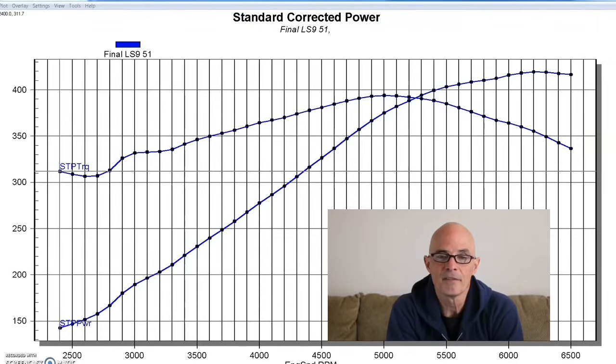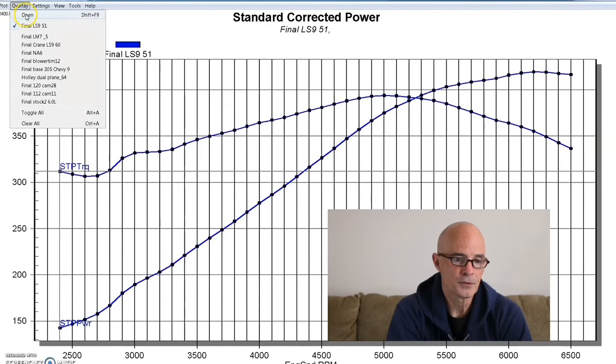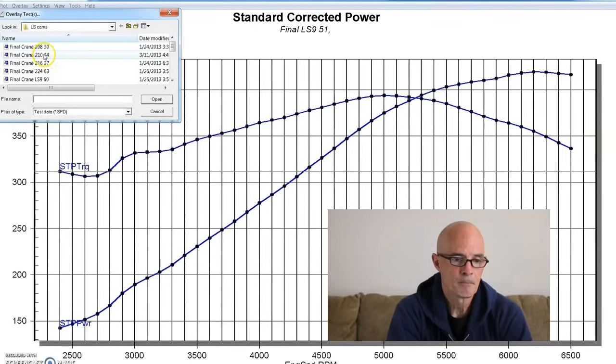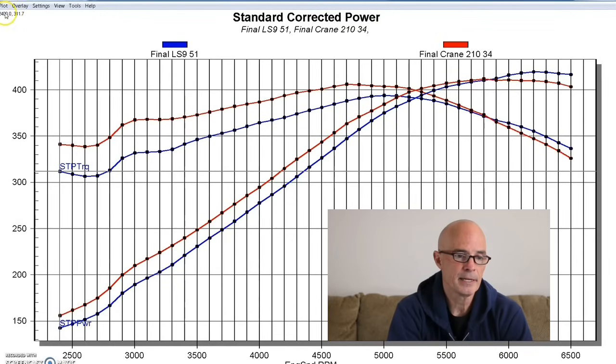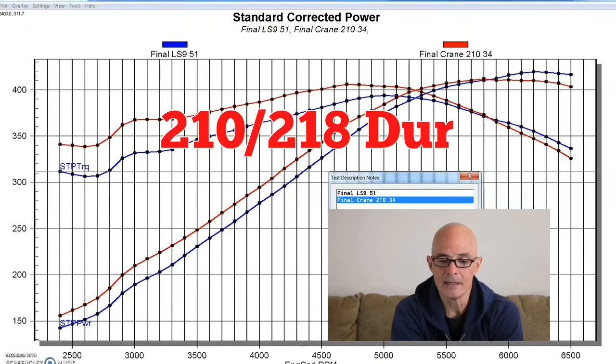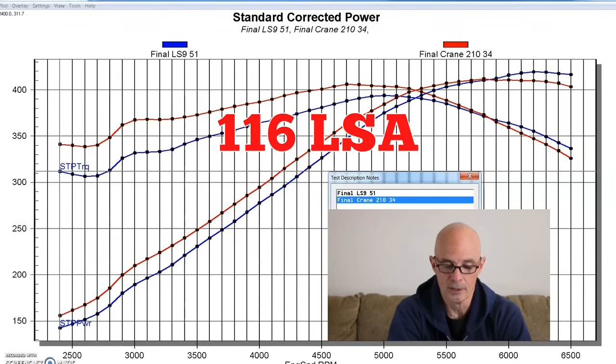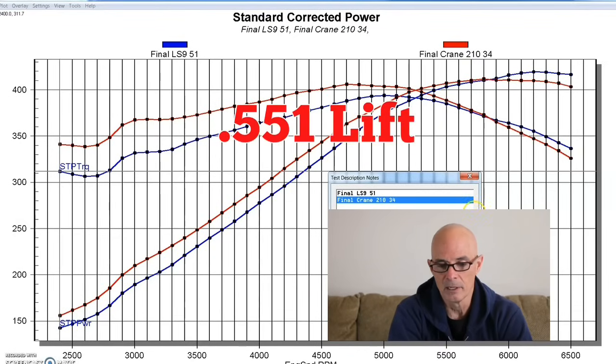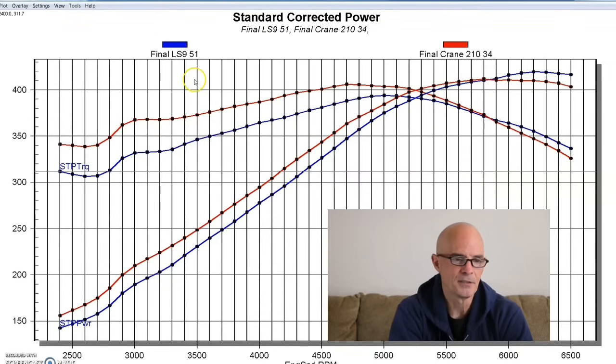But this is a comparison actually between the factory LS9 cam, which has a very wide lobe separation angle, and an aftermarket Crane cam. And I picked this because this is the closest combination I had that had basically the same kind of intake duration. We'll overlay this first and we can take a look at this. As you can see, the Crane cam was a 210, 218 duration, 116 LSA, so it's still fairly wide, and 551 lift. So it kind of matched the lift of the LS9 cam.